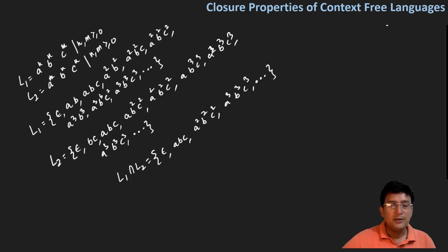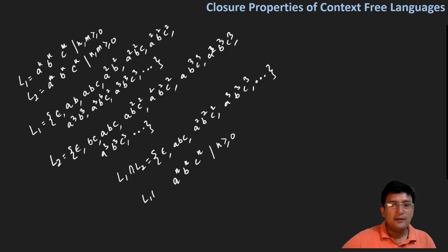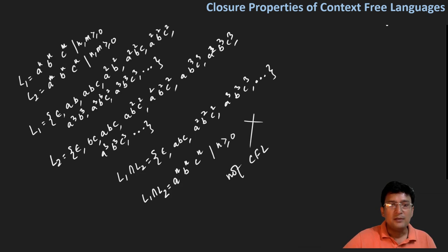So we can see that in L1 intersection L2, the counts of A, B, and C are all the same. So the intersection language is a^n b^n c^n, where n is greater than or equal to 0. We know that a PDA cannot be built for this language, so it is not context-free. Therefore, context-free languages are not closed under intersection.